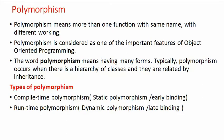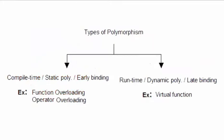The first type is compile-time polymorphism, also called static polymorphism or early binding. The second type is runtime polymorphism, also called dynamic polymorphism or late binding. Examples of compile-time polymorphism include function overloading and operator overloading. An example of runtime polymorphism is the virtual function.